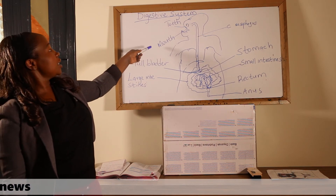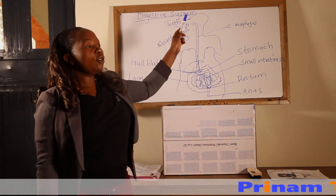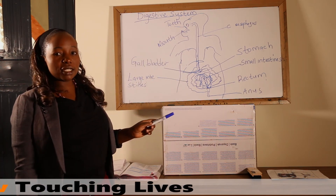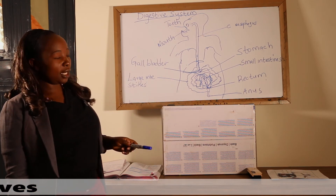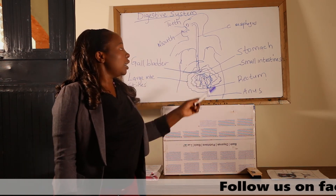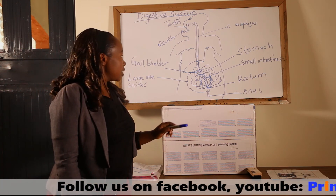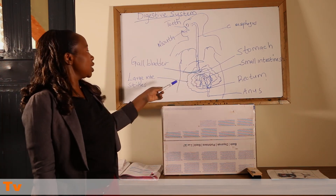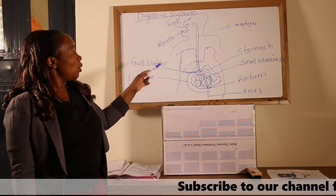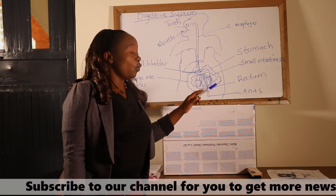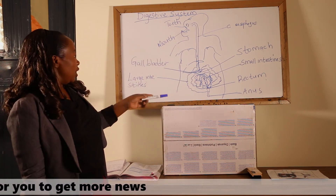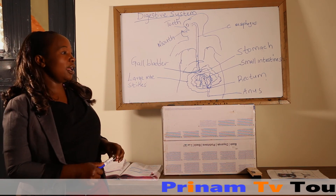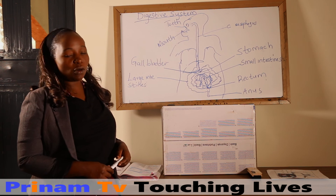The digestive system comprises the mouth, where food is taken through the oesophagus down into the stomach. In the stomach, digestive juices produced by the gallbladder digest the food. Then the food is taken into the small intestines where absorption takes place. From the small intestines, the food goes into the large intestines where absorption of water and mineral salts takes place. What remains — the undigested food — is pushed into the rectum, and then removed through the anus as waste products.